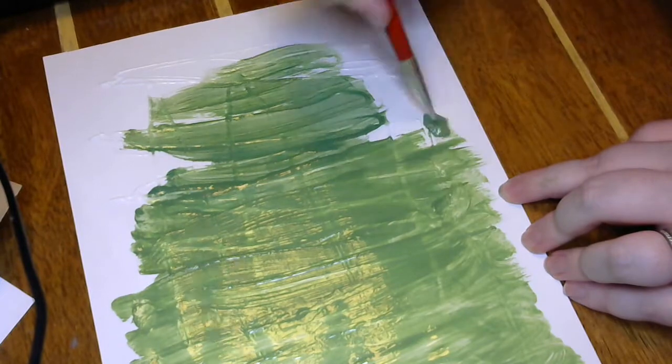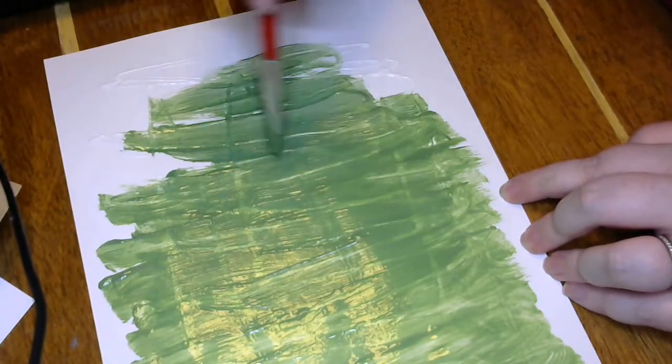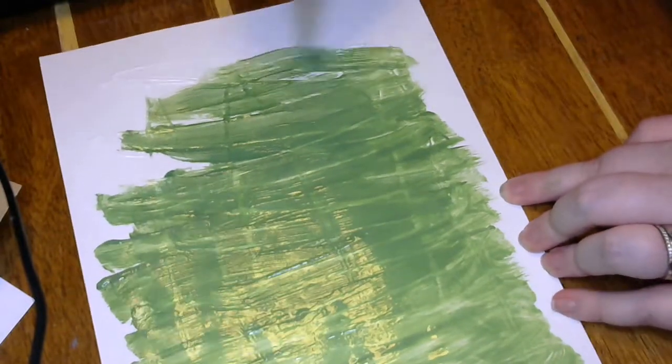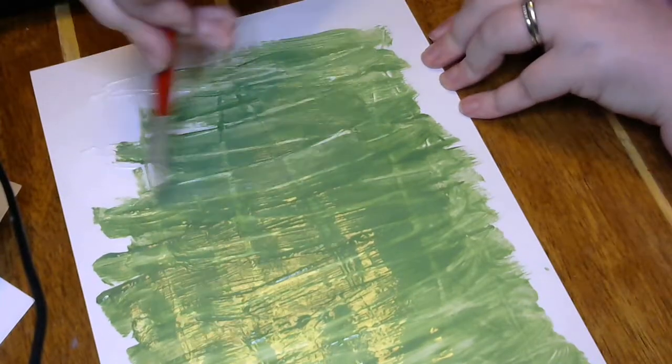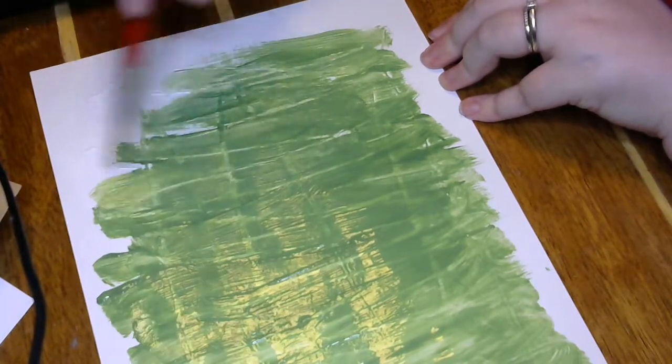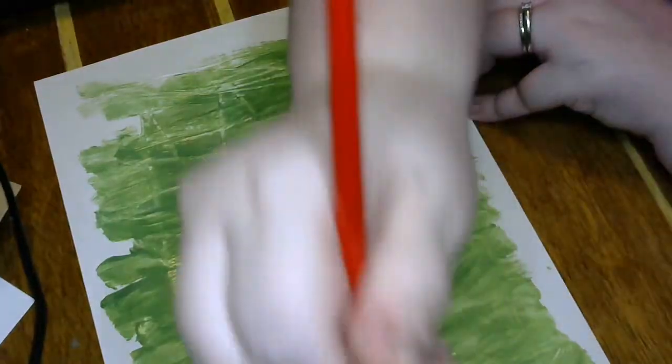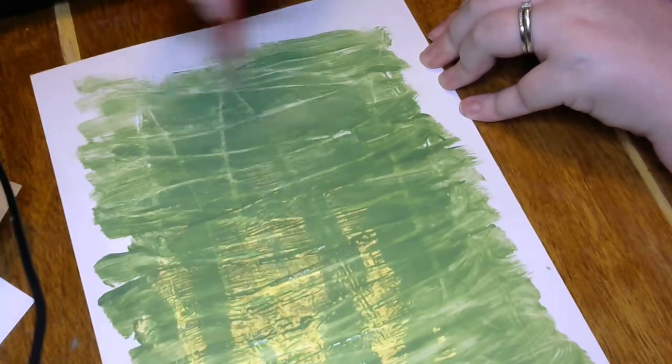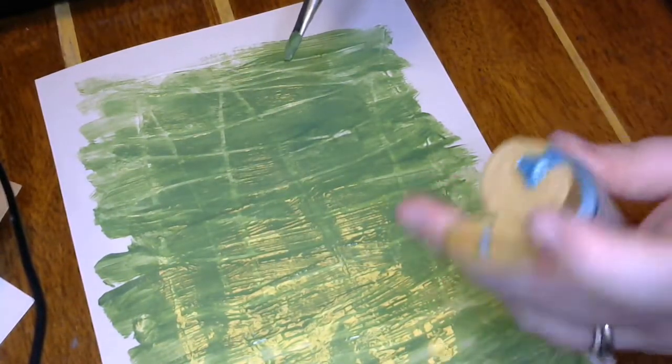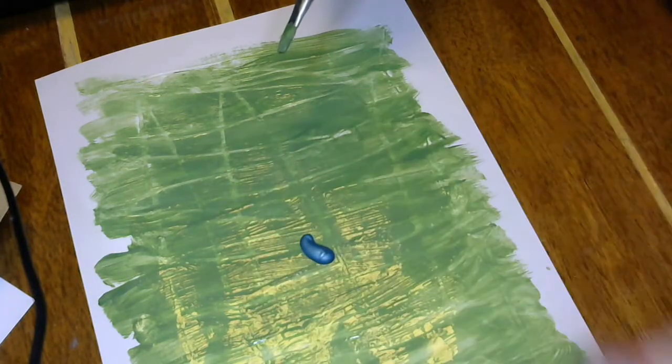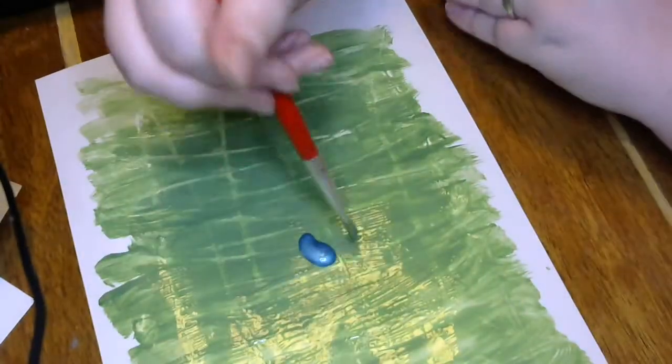So this one's going to be different because I did a crisscross with my glue, so you can really play along with this and kind of make your own designs. But it's still going to be kind of like that marbling. So I'm actually going to go ahead and add a little bit of that blue. That's a lot. No control.